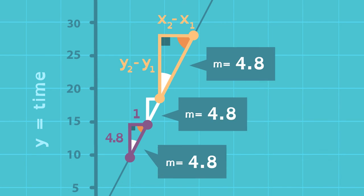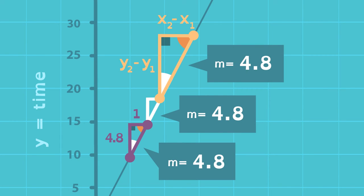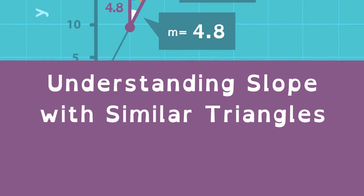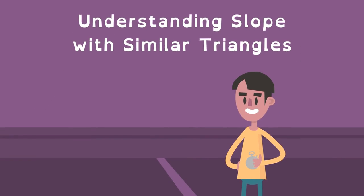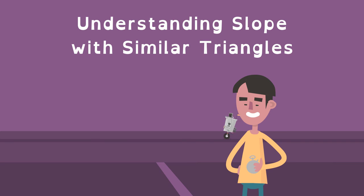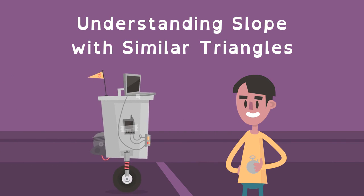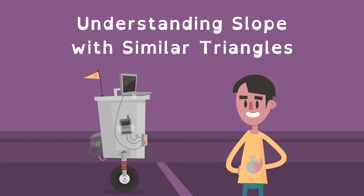This proves that the slope of any triangle on the line will be 4.8. Understanding slope and similar triangles helps Jason show that his robot moves at a constant speed of 4.8 minutes per lap. Nice going Jason!